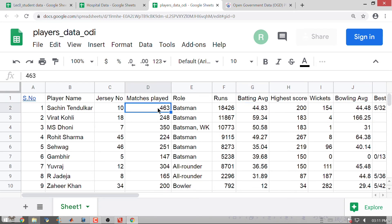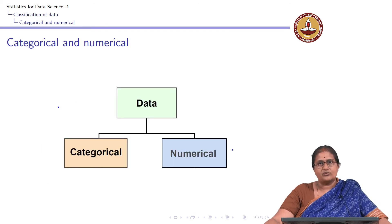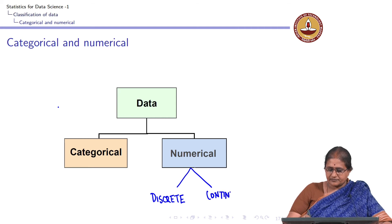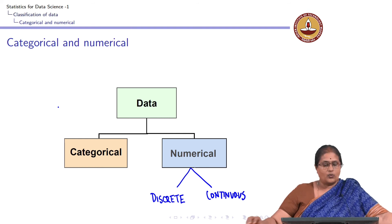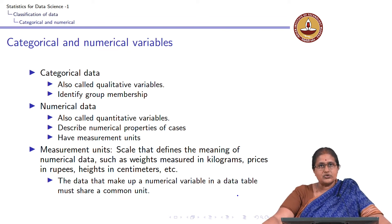When I come to the cricketing data, matches played and batting averages, wickets taken — 154 wickets, runs scored 200 runs. You can see that numerical data has associated measurement units. Also, when I talk about matches, it is a whole number like 463, whereas batting averages can take any value including fractions. This tells us that within numerical data I could have discrete data and I could have continuous data.